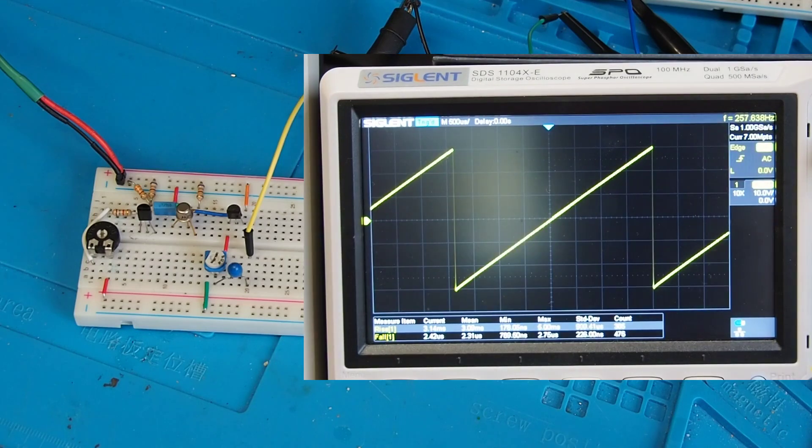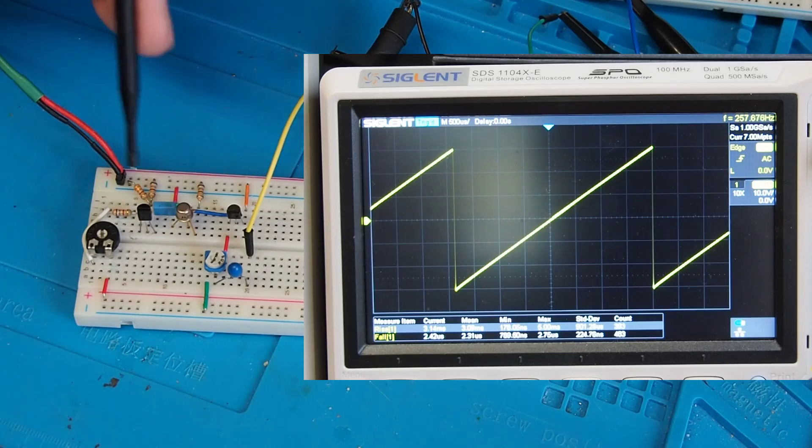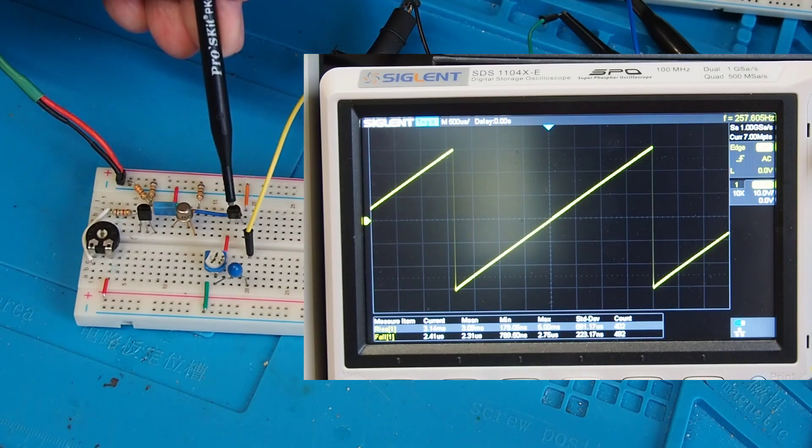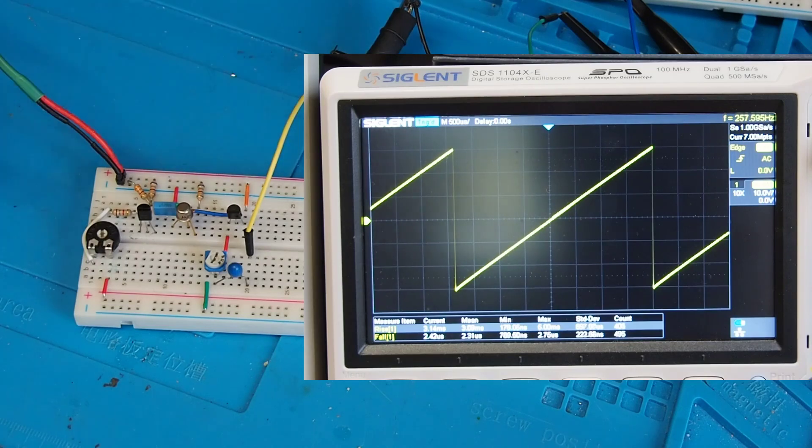That's hopefully an example of the use of a unijunction oscillator, in this case with that transistor providing a constant current source for charging this capacitor. The third transistor is merely acting as an output buffer. So that was circuit number two.